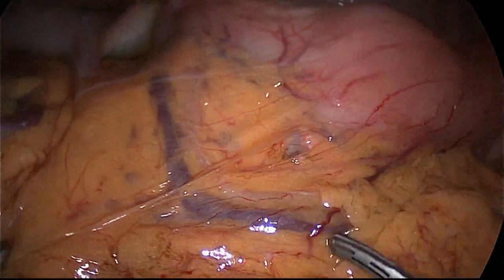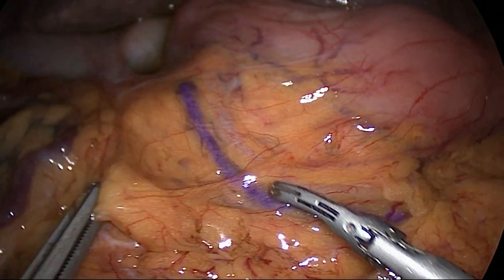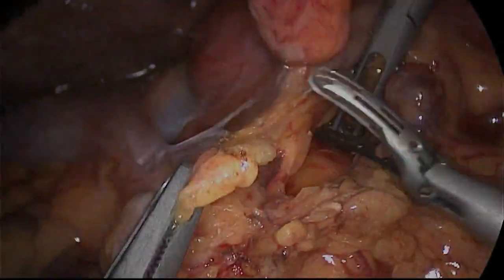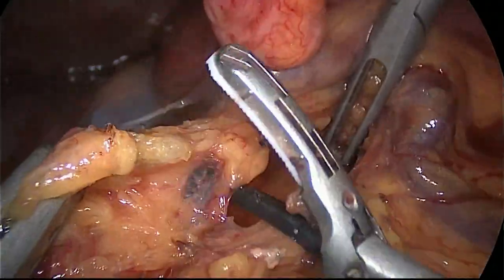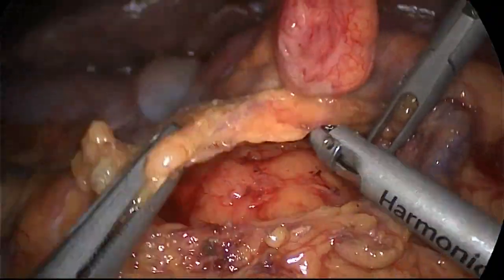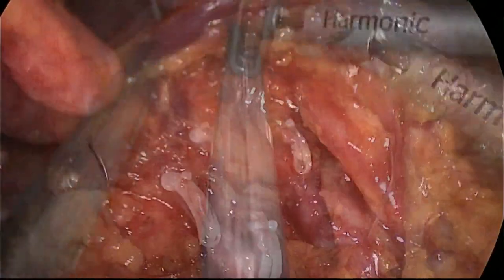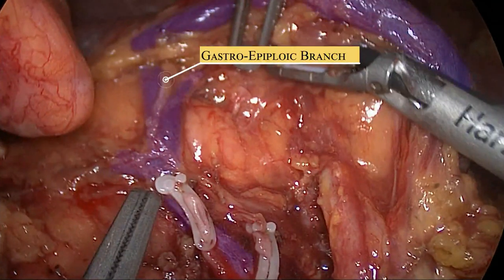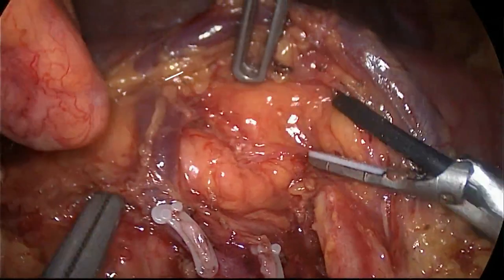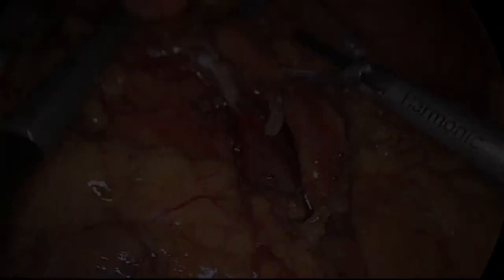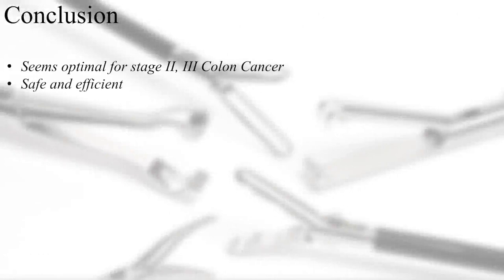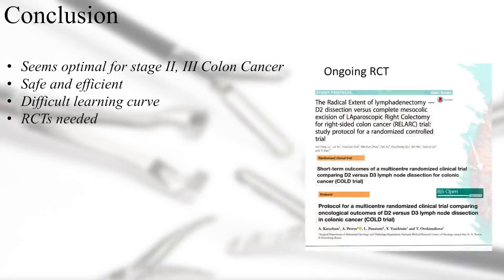Finally, we identify the gastroepiploic vein when entering the lesser sac from above after opening the colic omental attachments. As a conclusion, complete mesocolic excision seems to be adequate for stage 2 and 3 colon cancer. The latest literature shows equal peri- and post-operative complication rates as the technique becomes more widespread. It still presents a difficult learning curve, and we await the results of ongoing randomized controlled trials that might make it the gold standard in right oncologic colectomies.